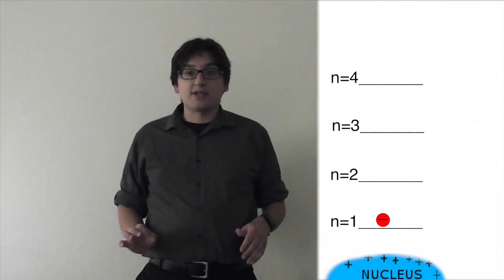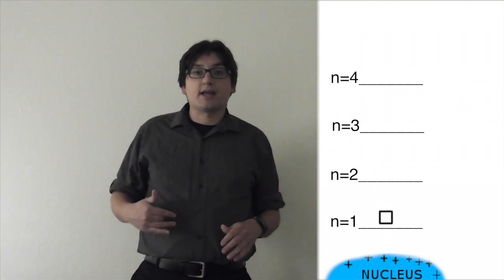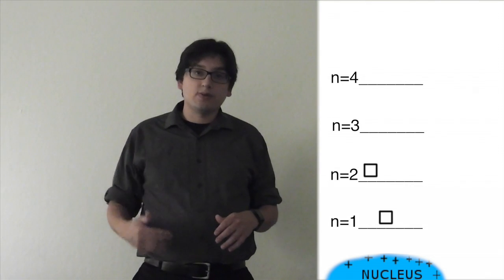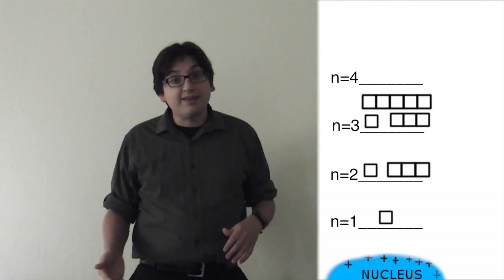Remember the orbitals that I mentioned. There's only a 1s, but then when I get to n equals 2, there's a 2s and a 2p, and when I get to 3, there's a 3s, 3p, and 3d, and so forth. I'm going to be filling orbitals in that order.